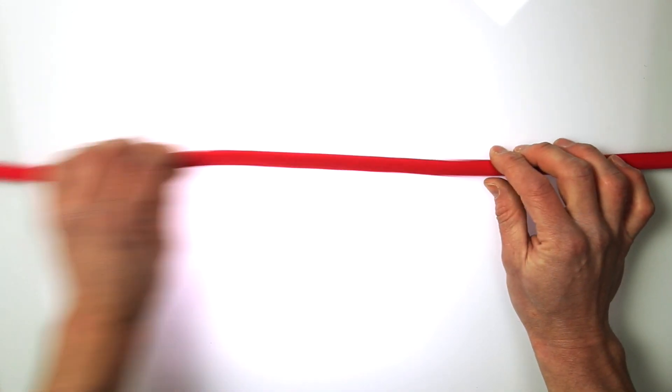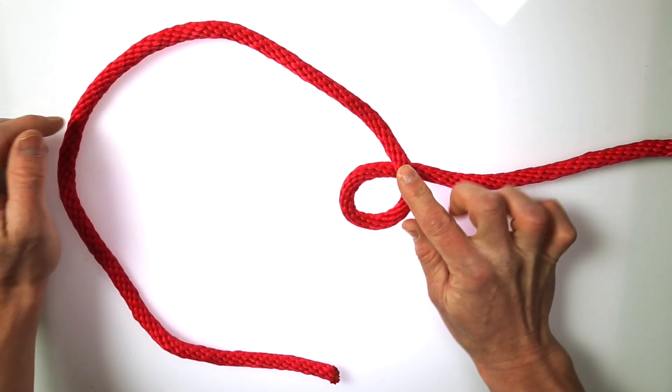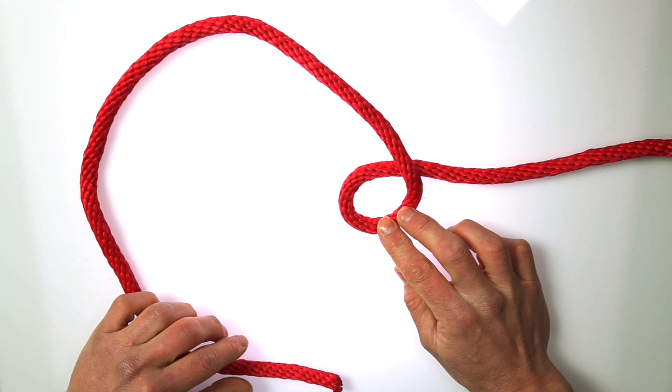First, make a loop on the rope like this. Now, a simple way to remember this knot is to use the rabbit and the tree analogy, so let's just do that.